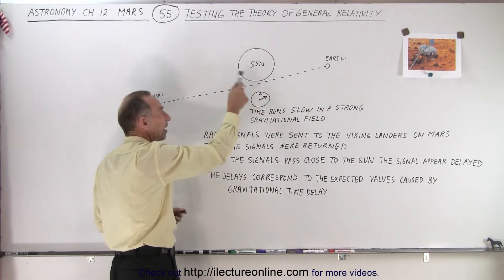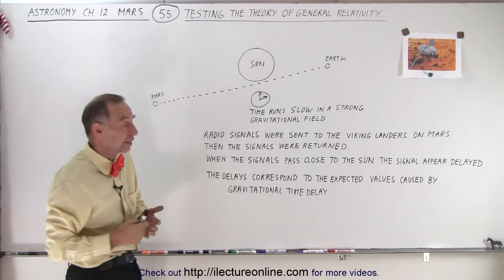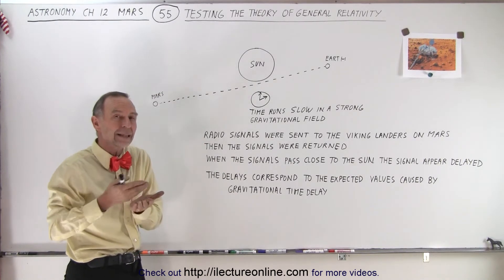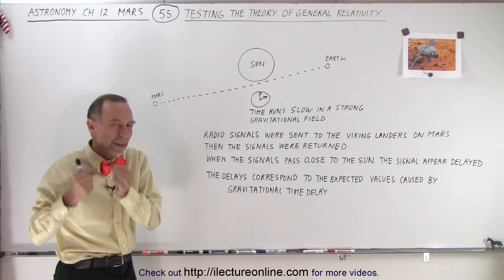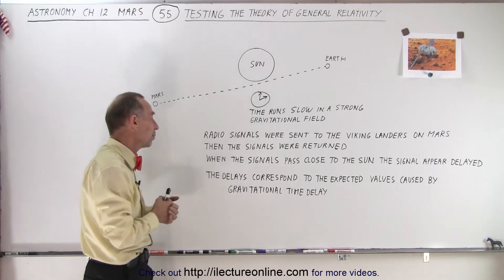When they pass close to the Sun, they're able to measure the delay caused by the gravitational effect, the special relativity effect. And before they did that, they would calculate out what they expected the difference in the timing would be.